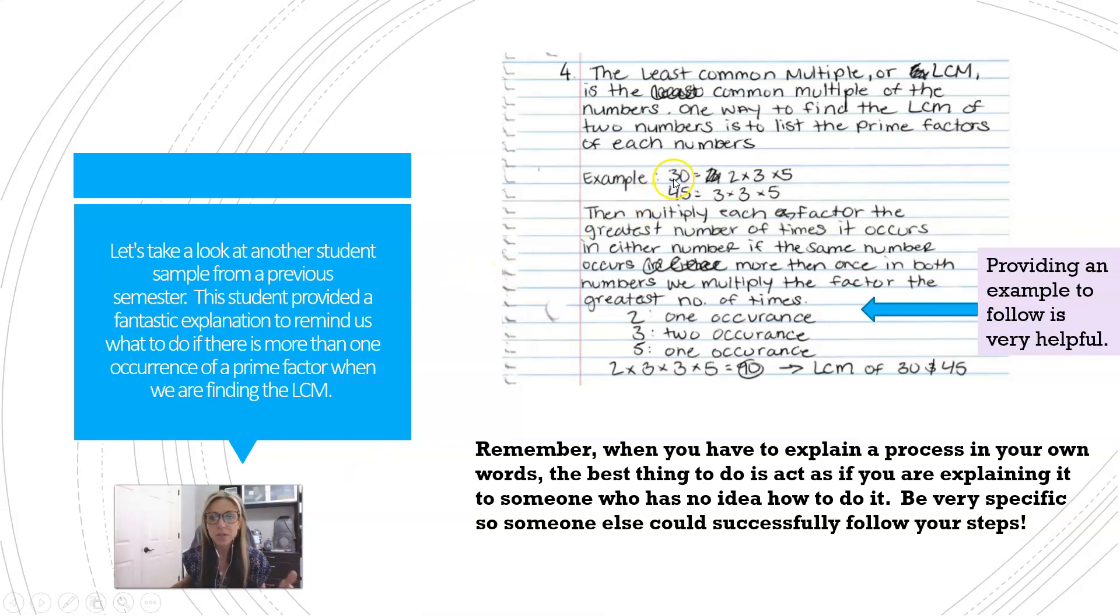She used an example of finding the LCM of 30 and 45, and she went even a little bit deeper and told us what to do if a number shows up more than once in one of your lists. You can see how the number 3 shows up in the list of factors of 30 and 45.